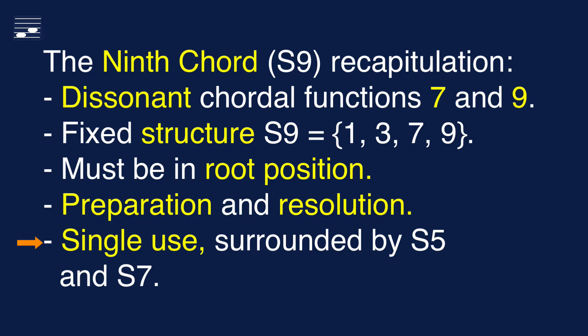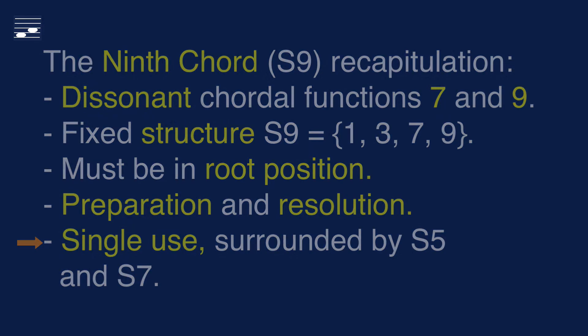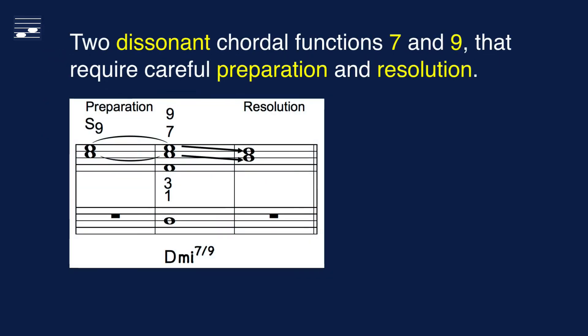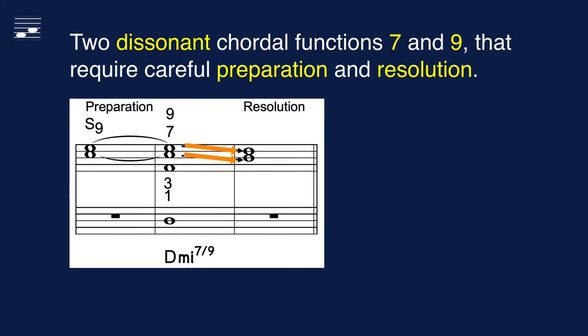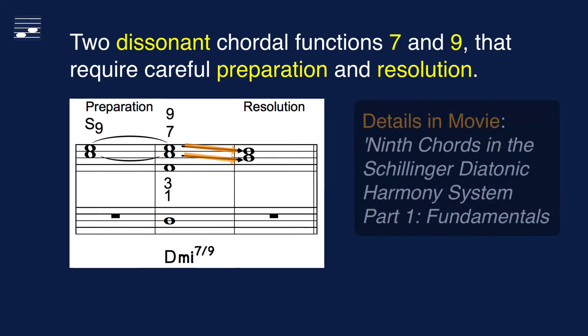These must be surrounded by either triads, S5 or 7th chords. This diagram presents the essentials. We see a D minor 9 chord with chordal function 1, the root, in the bass plus the 3, 7 and 9 in the upper parts. The 7 and 9 create dissonant intervals with the lower functions and must therefore be carefully prepared and resolved. In this example we see preparation by suspended notes from the previous chord, and resolution by stepwise descending motion into the following chord.